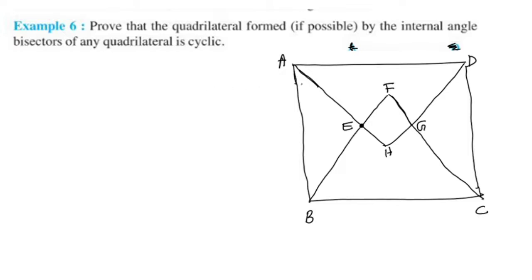This is the quadrilateral A, B, C, D. The internal angle bisectors are A-H, B-F, C-F, D-H. These internal angle bisectors form a new quadrilateral. The quadrilateral formed is E, F, G, H. So E, F, G, H is a cyclic quadrilateral.